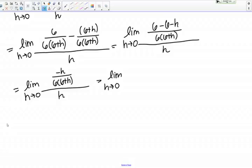A way that I can rewrite this is negative h over 6 times 6 plus h times the reciprocal of the denominator. In this case, that would be times 1 over h.